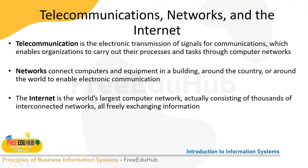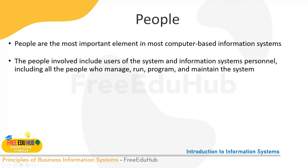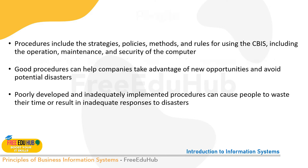People are the most important element in most computer-based systems, because they are the ones entering data and maintaining the systems. People involved include users of the system and information system personnel — people who manage and run the programs and maintain the systems.